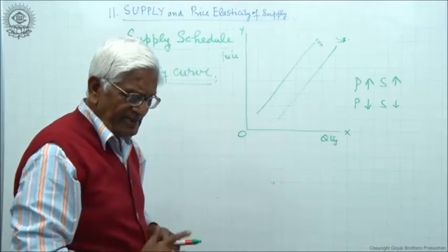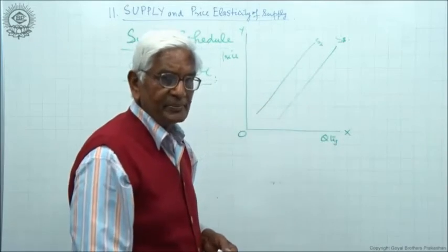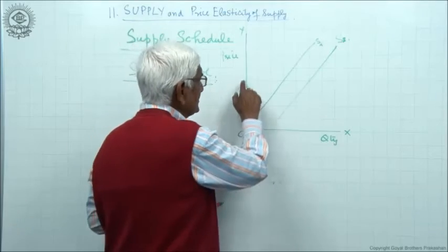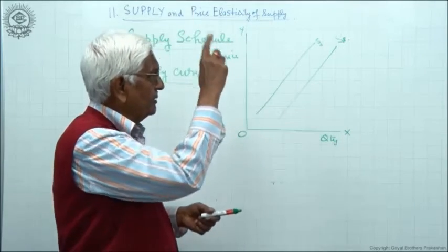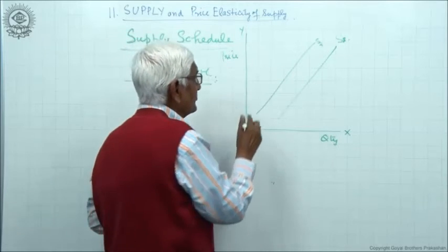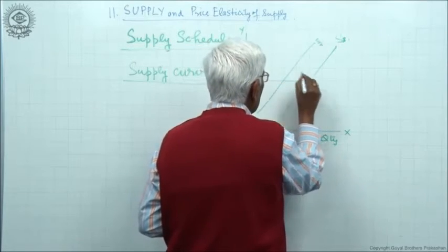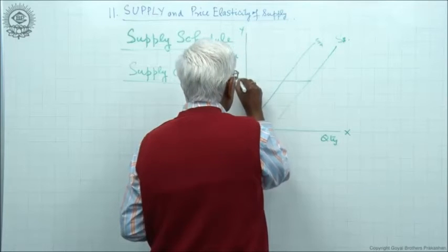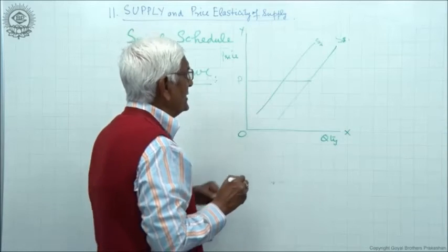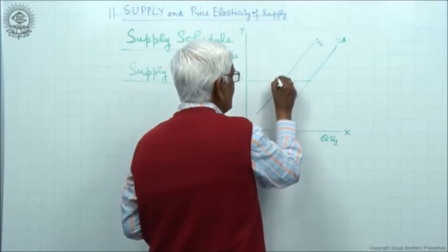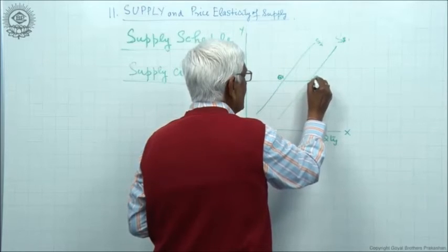Then market supply curve will be simply horizontal sum. Horizontal ka matlab? Yahaan se jodna shuru karenge, yaha upar nahi. To manli ye, I draw a line. Let us say P. At this price, supply by A is q1 and supply by B is q2.